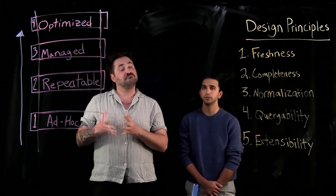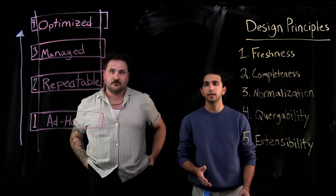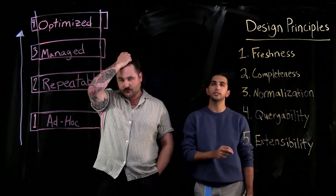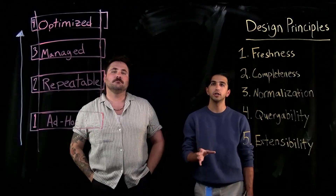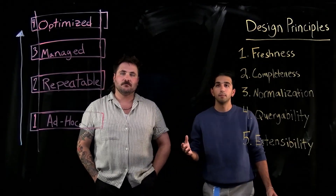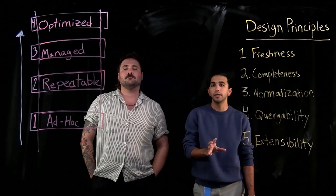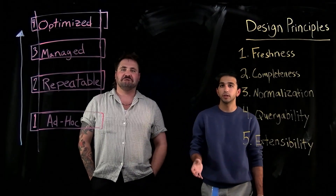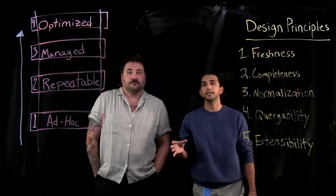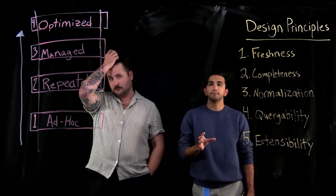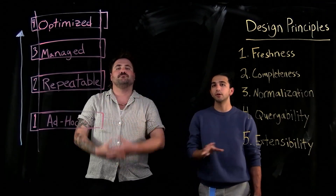That brings us to our third pillar, which is normalization. The question it's asking is: can we join our data? This is where most systems break, because you need schema consistency across different data sources and across different accounts that your company manages. It could be something as simple as security groups connecting to EC2 instances, or more complex depending on specific teams' tags and ownership. Your data model needs universal keys — think account ID, think region — to always maintain a consistent data schema across your cloud asset inventory.